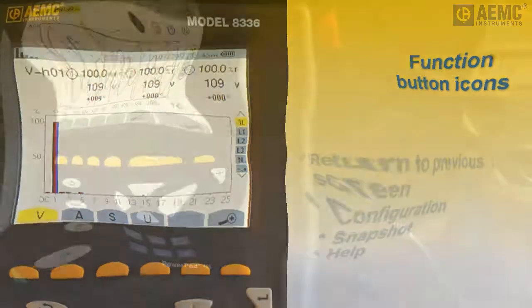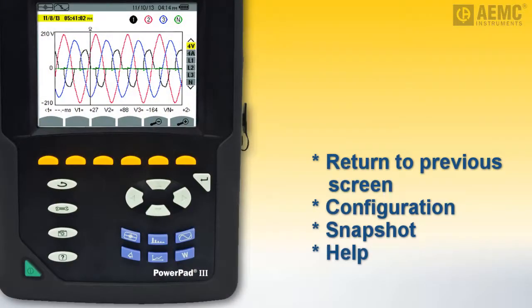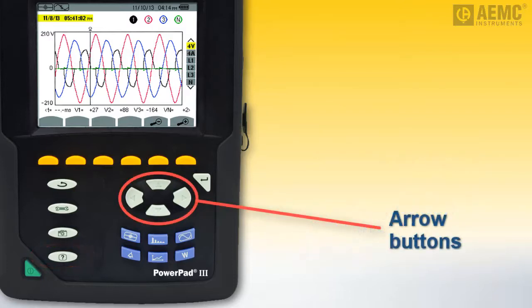Below the function keys are three additional sets of buttons. On the left is a column of buttons that, top to bottom, return to the previous screen, display the configuration options menu, take and display snapshots, and display context-sensitive help. To the right is the arrows keypad. Use these in conjunction with the Enter button to navigate, highlight, select, edit, and save options and parameters.